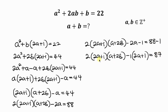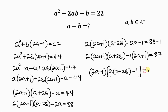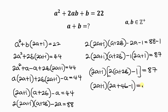Notice once again that (2a plus 1) is common, so I can factor out (2a plus 1). Opening the bracket: (2a plus 1) times — expanding inside — 2 times a is 2a, plus 2 times 2b is 4b, minus 1, equal to 87. So we have two factors which multiply to give 87.